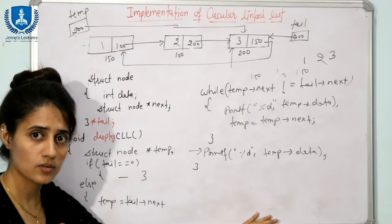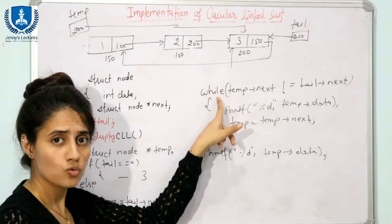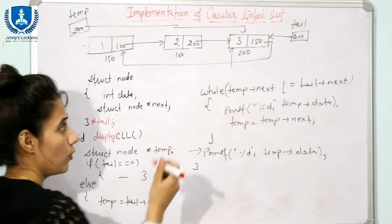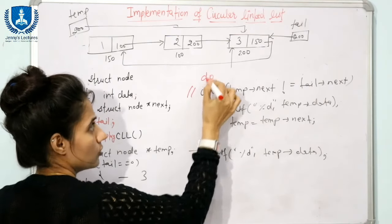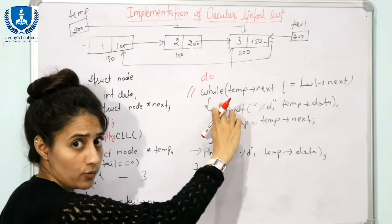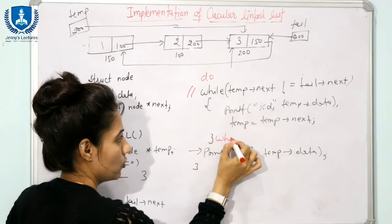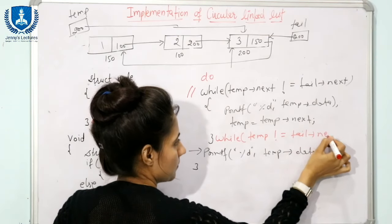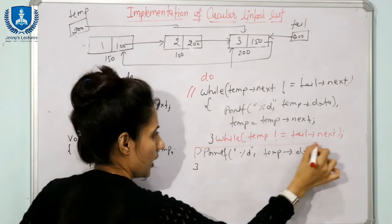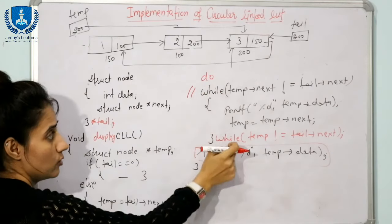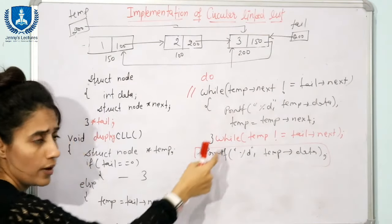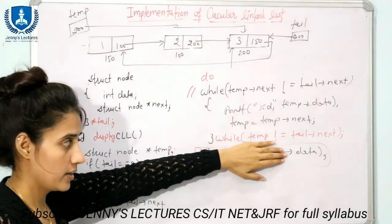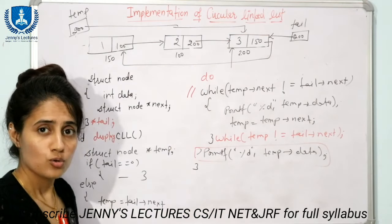We've discussed all options: creating a circular linked list maintaining head only, both head and tail, or only tail, and how to display it. Alternatively, instead of a while loop with a separate last-node print, use a do-while loop: do { print data; move temp; } while(temp != tail->next). This way, no need to print the last node separately — 1, 2, 3 would all be printed inside the loop. Trace this do-while loop and tell me in the comments if it works correctly.